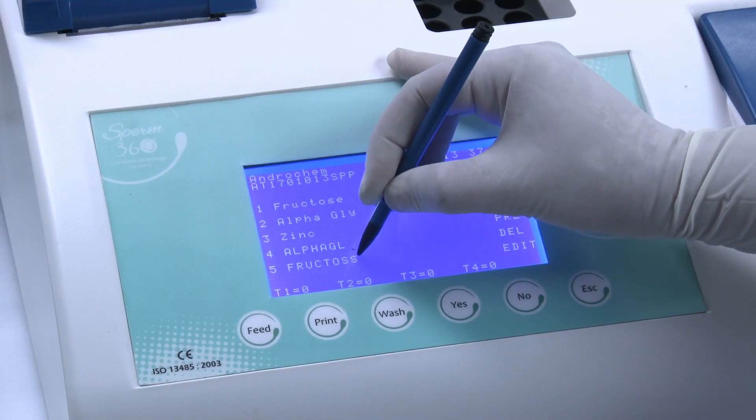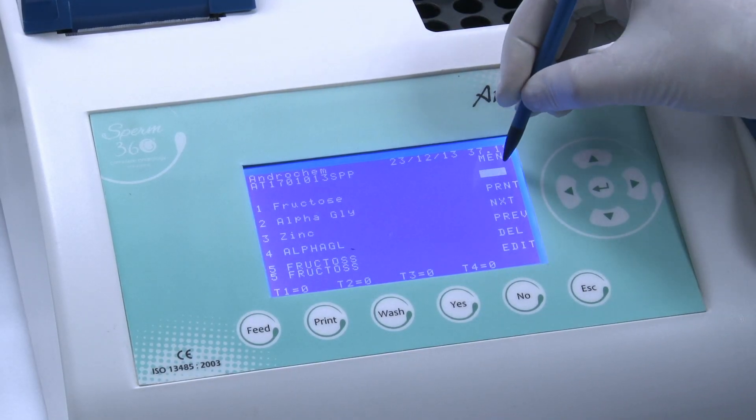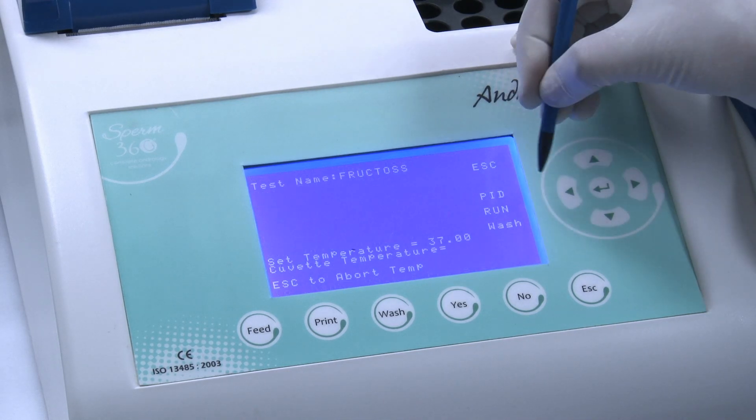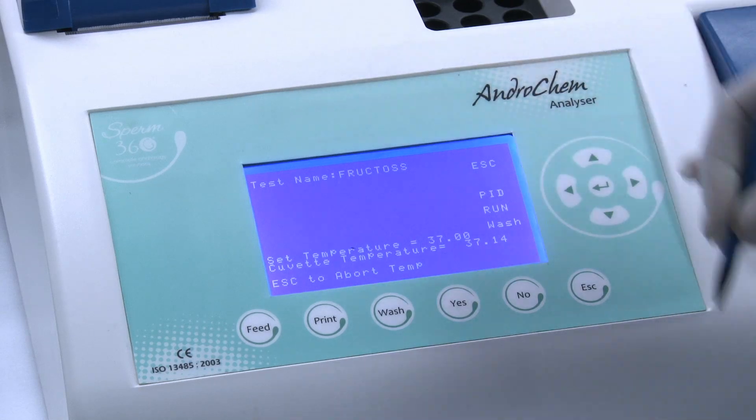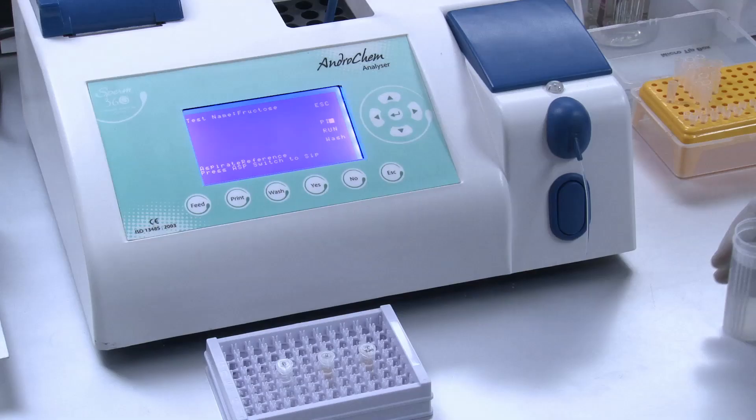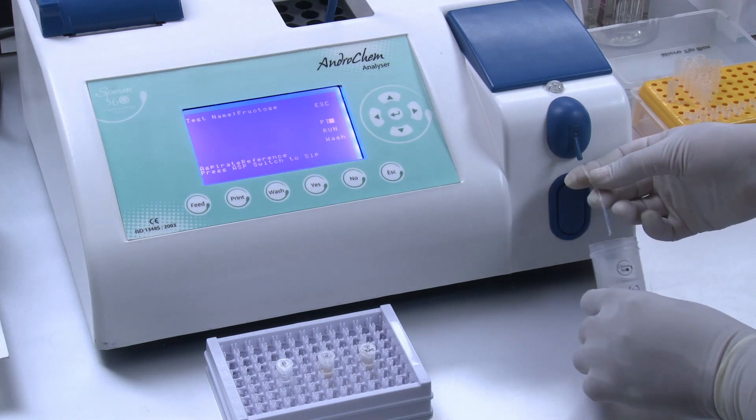Choose the program Fructose from the Androchem Analyzer and choose Run. The screen displays Aspirate Reference, Aspirate Distilled Water.